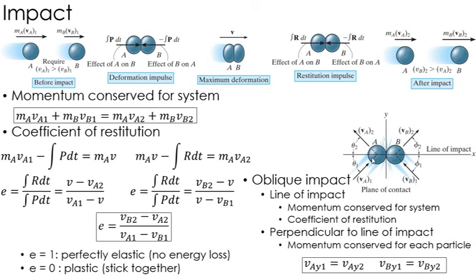So, again, to solve an oblique impact, I use these two equations along the line of impact, conservation of momentum for the whole system and coefficient of restitution. And then perpendicular to the line of impact, momentum is conserved for each particle individually, i.e., the velocities remain constant perpendicular to the line of impact.